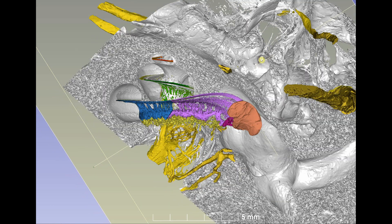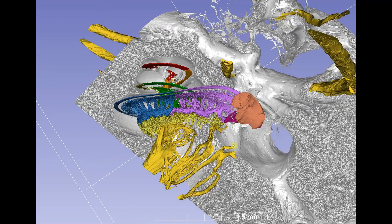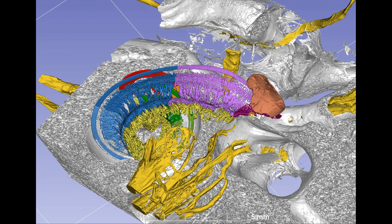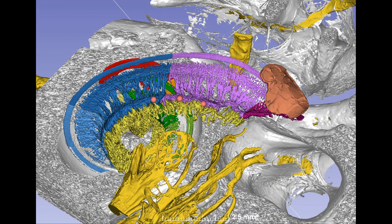To the right is the round window membrane. And as we rotate the cochlea, we see Rosenthal's canal, which houses the 30,000 human spiral ganglion cells of the auditory nerve.